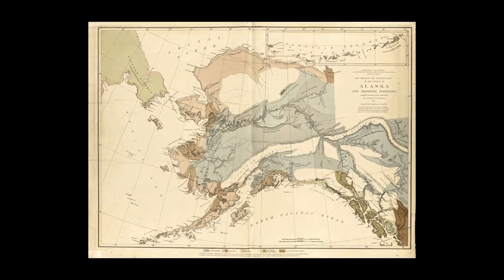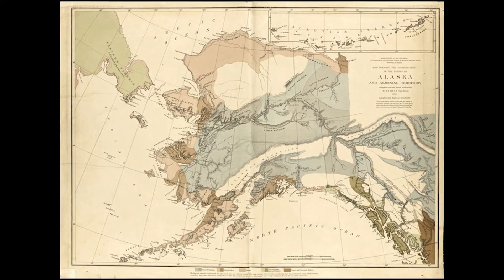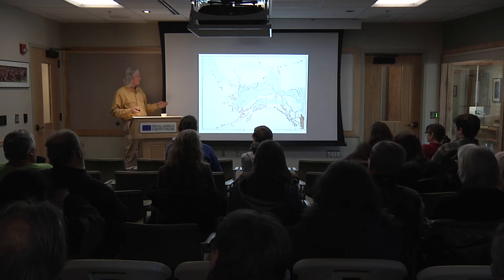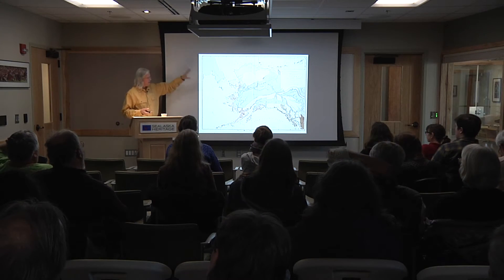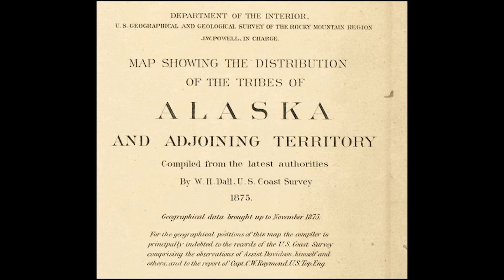In 1875, John Wesley Powell — who became a major father of American anthropology and Indian studies — published this map of the native tribes of Alaska and adjoining regions. What he really means by native tribes is the distribution of language families. But it was published by John Wesley Powell yet done by William Dahl and Davidson himself. So this was the Coast Survey's view of the language families of Alaska as published by John Wesley Powell.